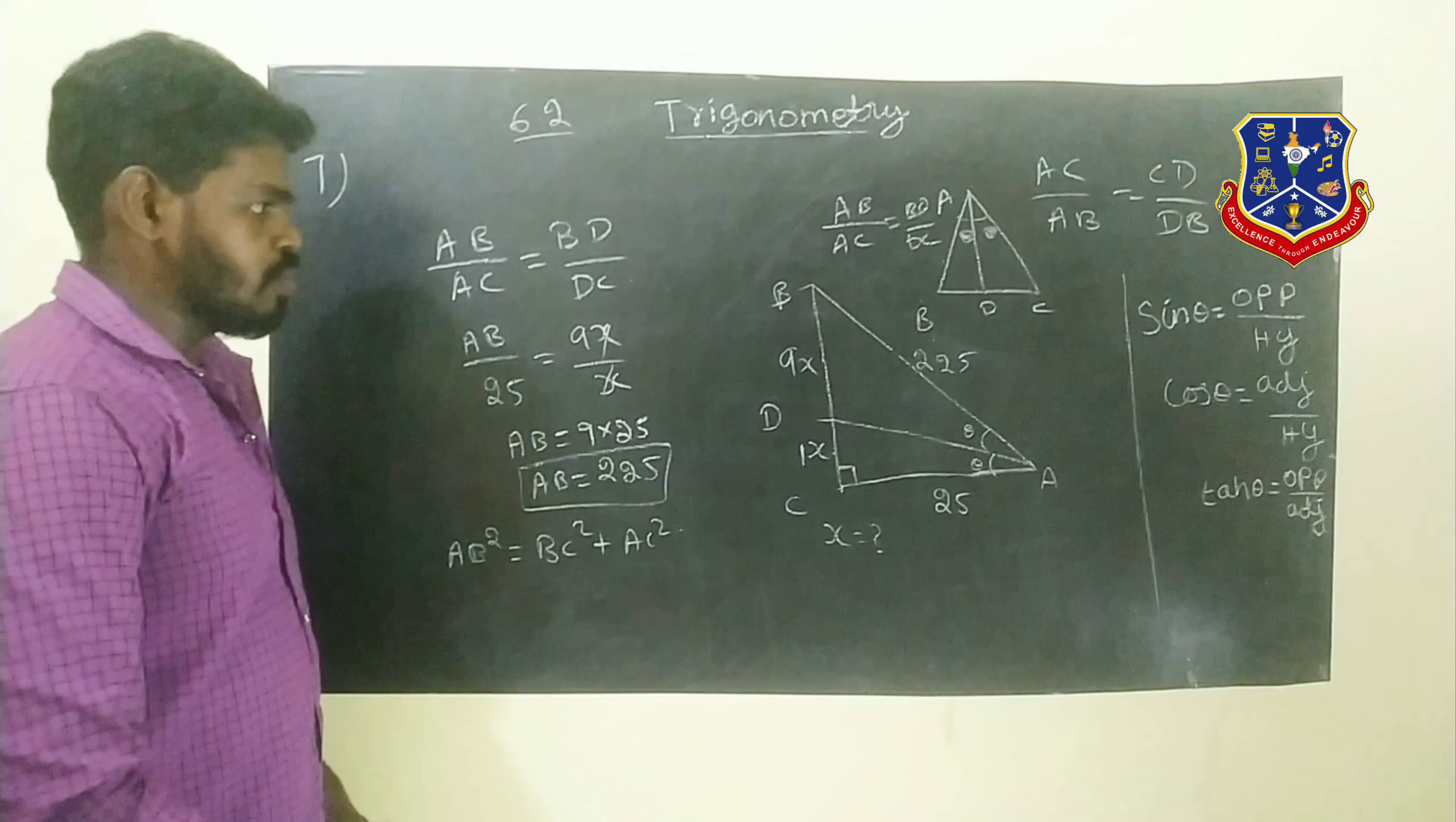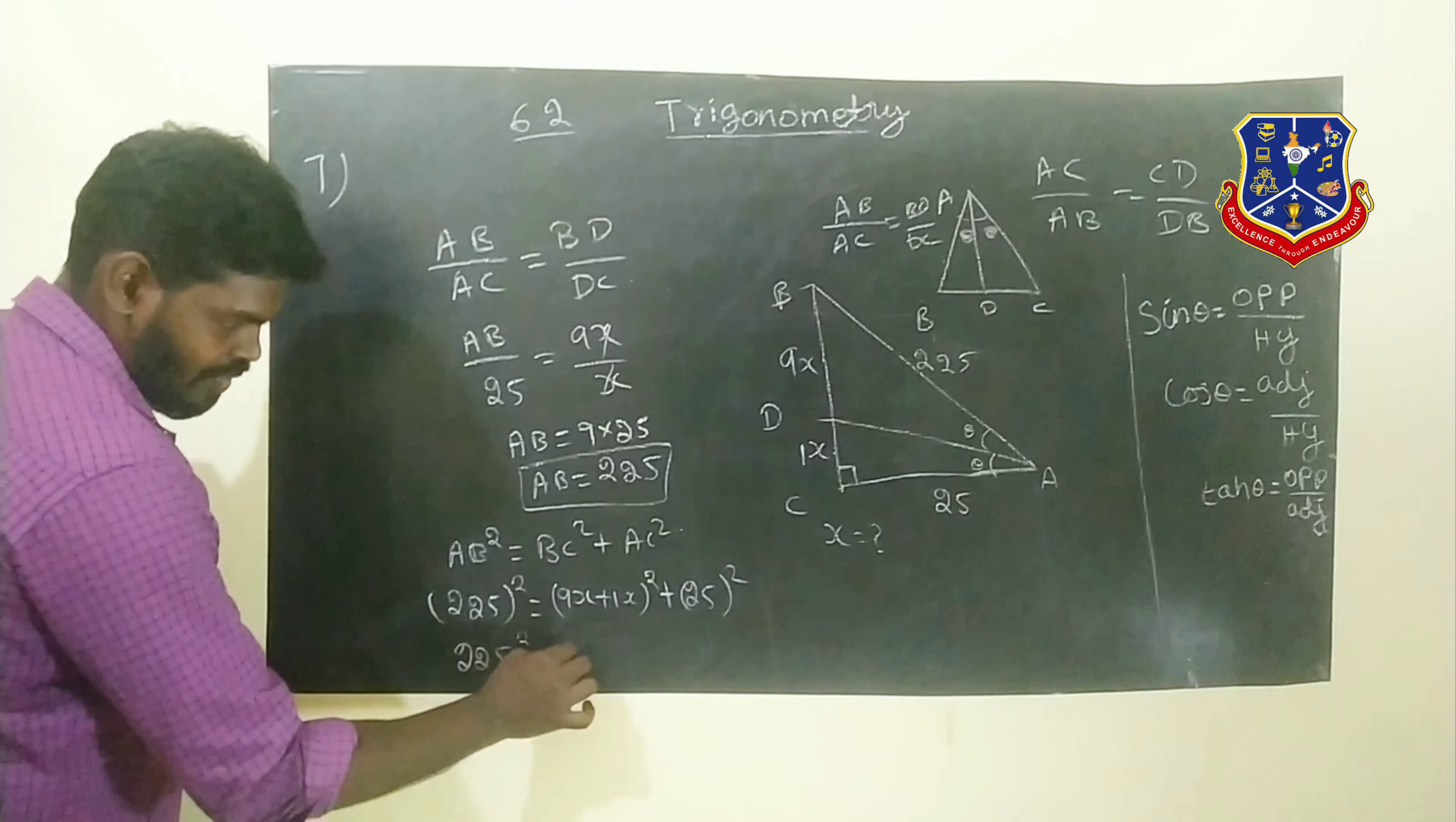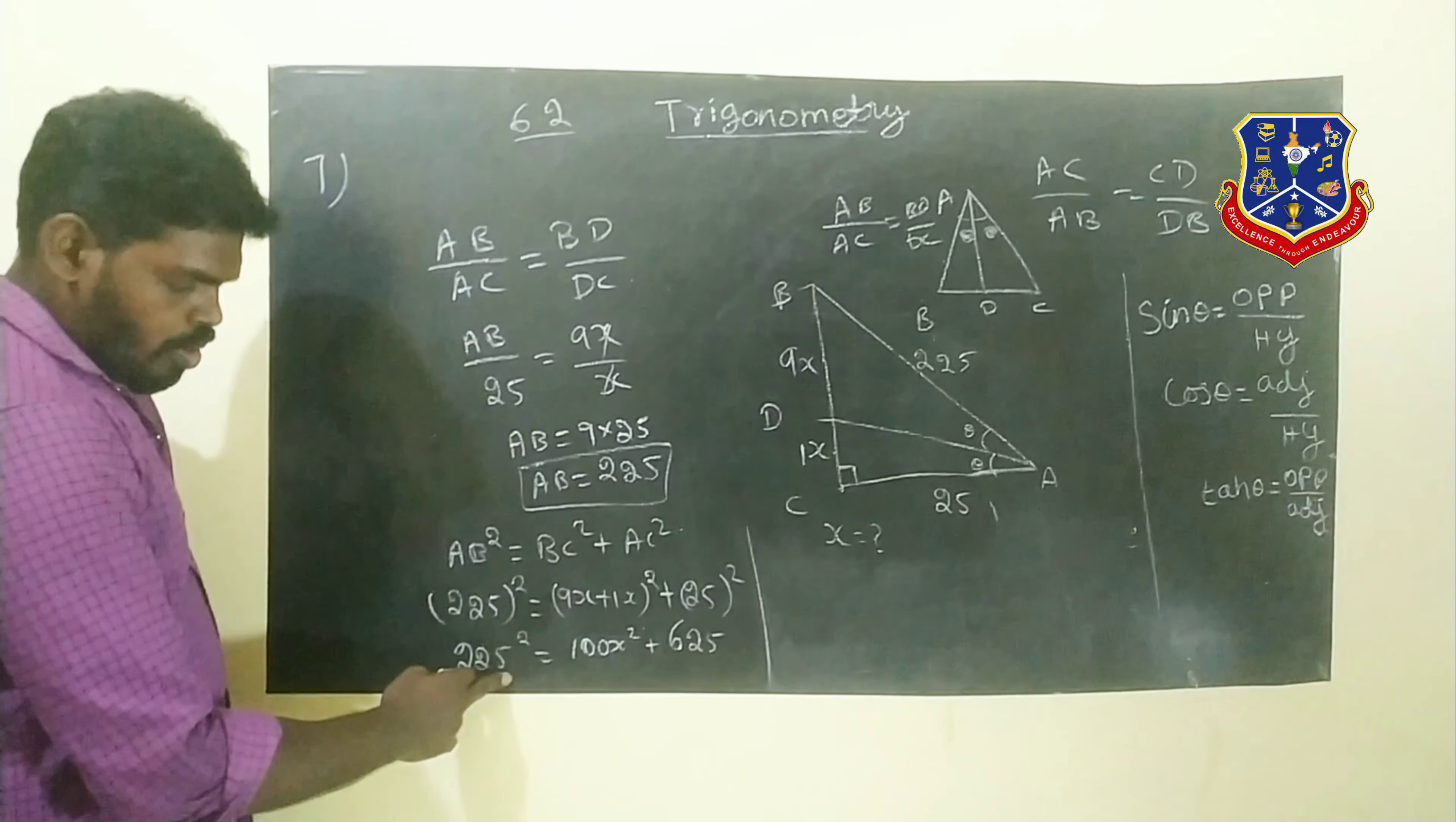We substitute this formula. AB squared is 225, so 225 squared equals BC squared. BC is 9x plus 1x, which is 10x, the whole squared, plus AC squared which is 25 squared. So we get 225 squared equals 100x squared plus 625.